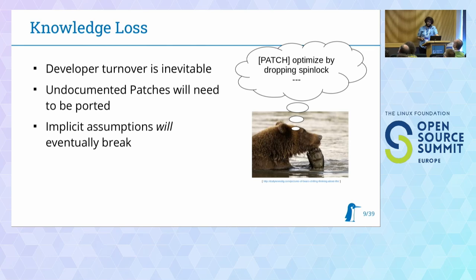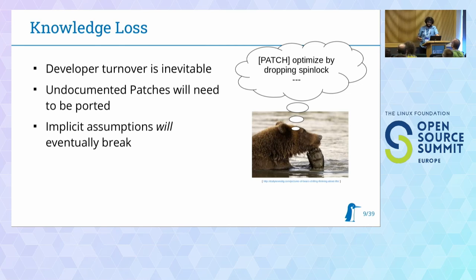One complication is knowledge loss — people leave the company. Working with downstream BSPs invites a development workflow where you don't write good documentation, because you know what the problem is and your reviewer knows too, so you don't explain it to others. You end up with patches like 'optimize locking' that just delete a spin lock out of the kernel. Now you're tasked with updating that, the colleague isn't there anymore, and you wonder: what was the problem? How can I reproduce it? Did they verify this was safe to do?